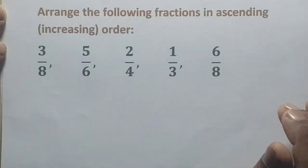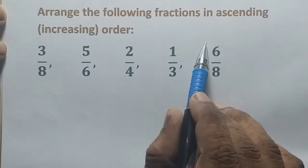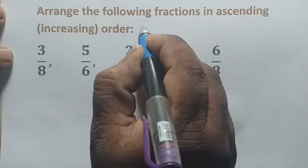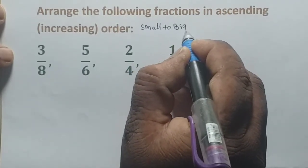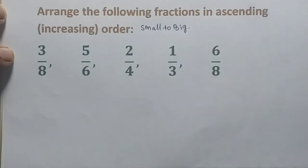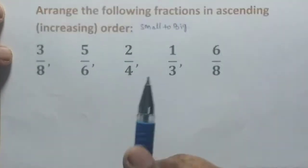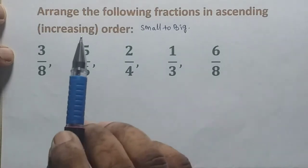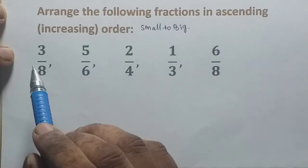Arrange the following fractions in ascending order. Ascending order, also called increasing order, means arranging from small to big numbers. Fractions involve addition, subtraction, and comparison. Comparison means ascending order or descending order — determining which fraction is less than or more than another.